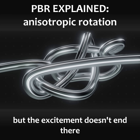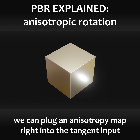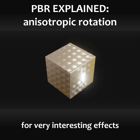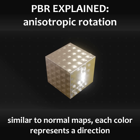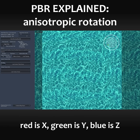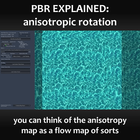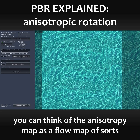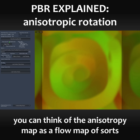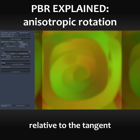But the excitement doesn't end there. We can plug an anisotropy map right into the tangent input for a very interesting effect. Similar to normal maps, each color represents a direction: red is x, green is y, blue is z. You can think of the anisotropy map as a flow map of sorts, which defines the direction in which the strands will be going relative to the tangent.